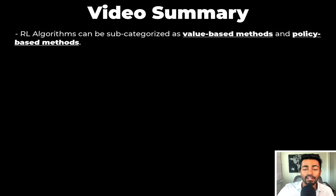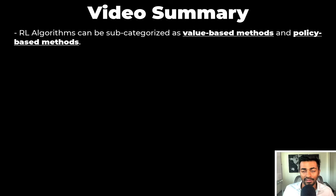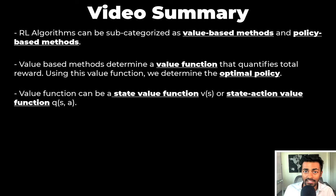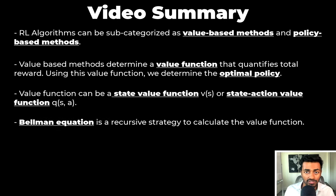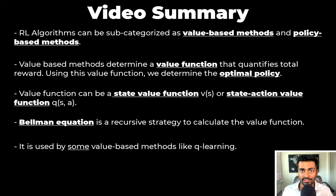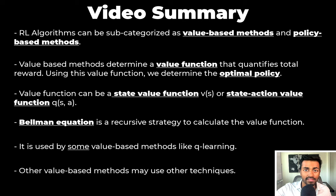So to summarize this video, reinforcement learning algorithms can be subcategorized as value-based methods and policy-based methods. Value-based methods will determine a value function that quantifies the total reward. And using this value function, we can determine the optimal policy. The value function can be a state value function, that is V, or a state-action value function, which is Q. The Bellman equation is a recursive strategy to calculate the value function. It is used by some value-based methods like Q-learning. Other value-based methods might use other techniques to determine these value functions.